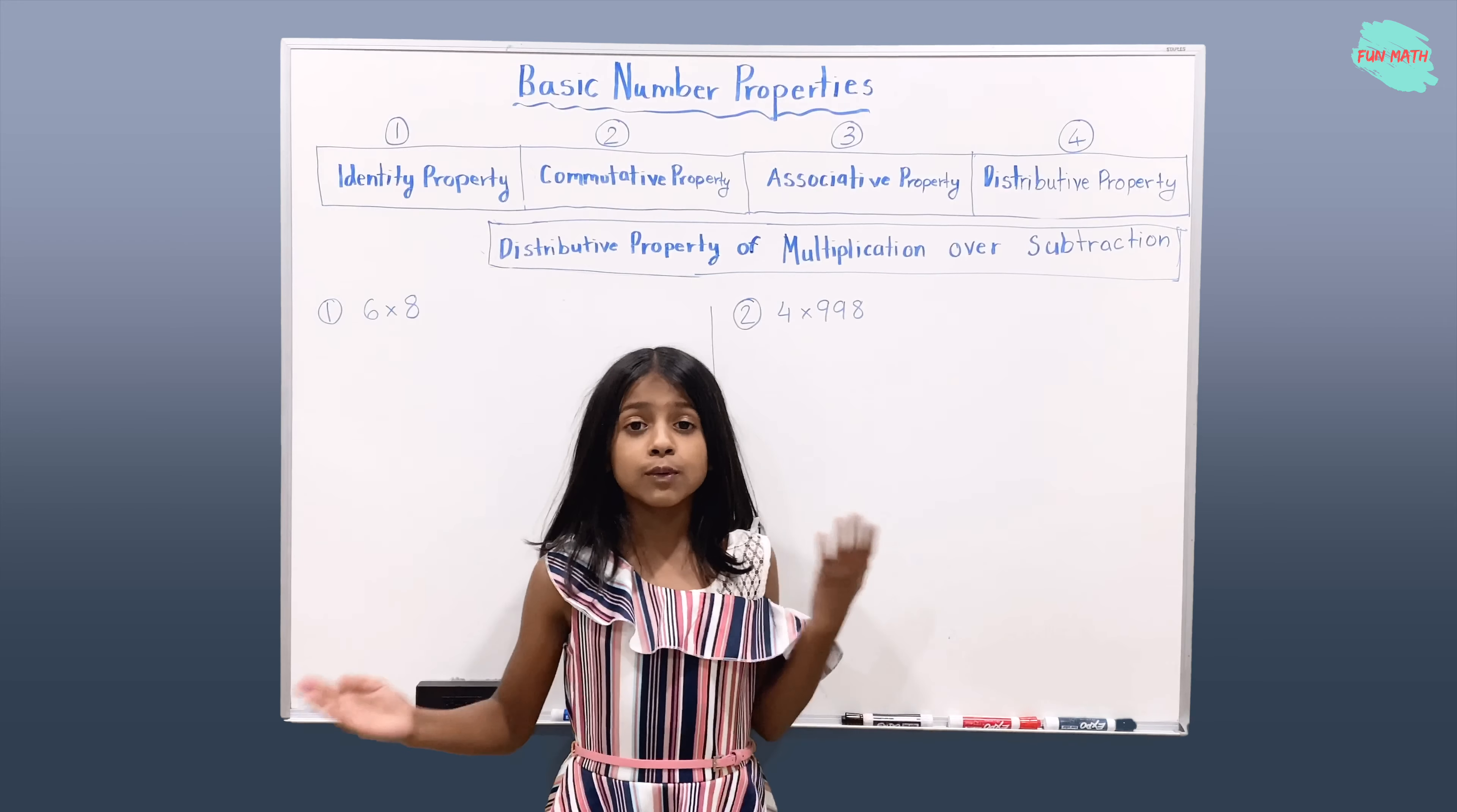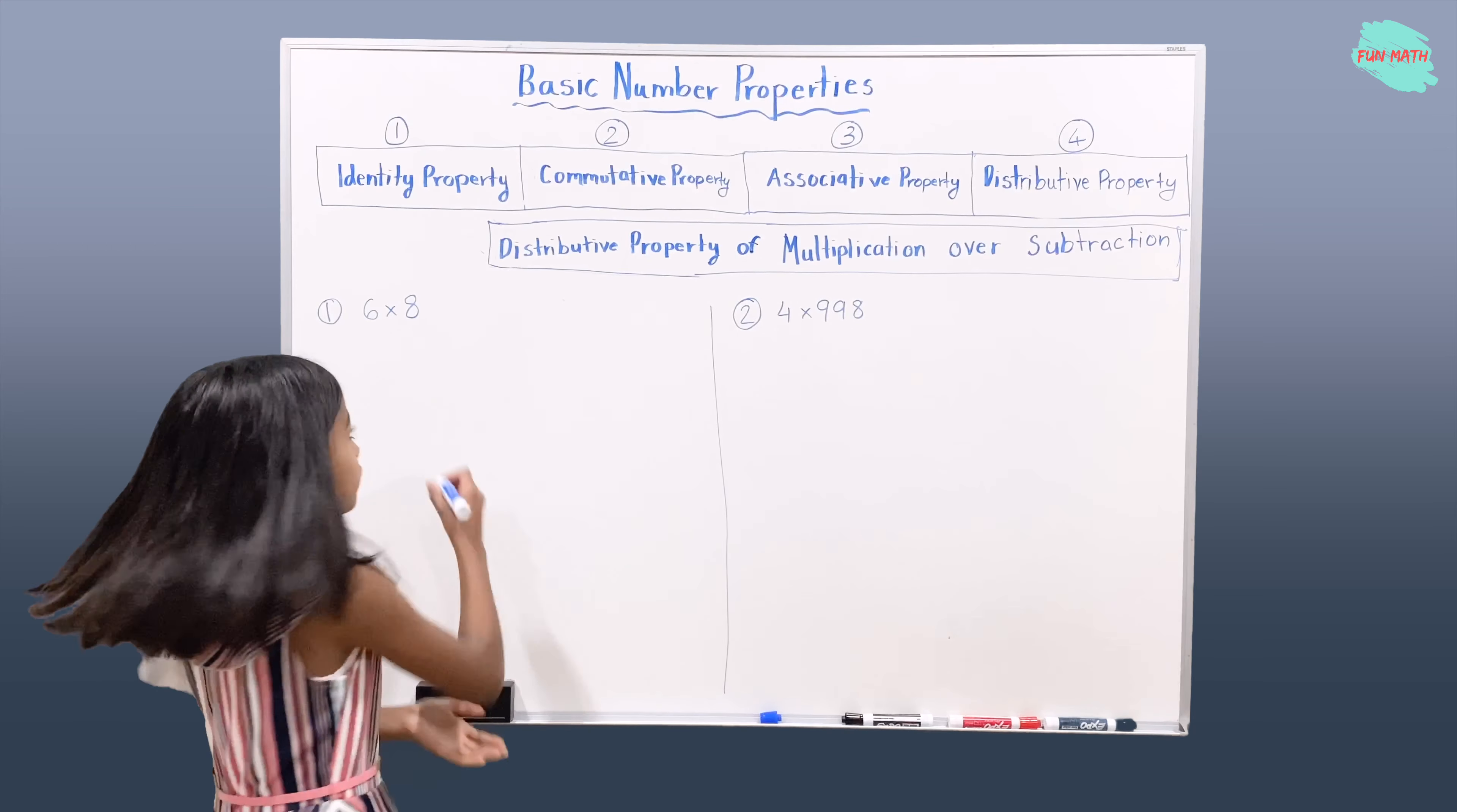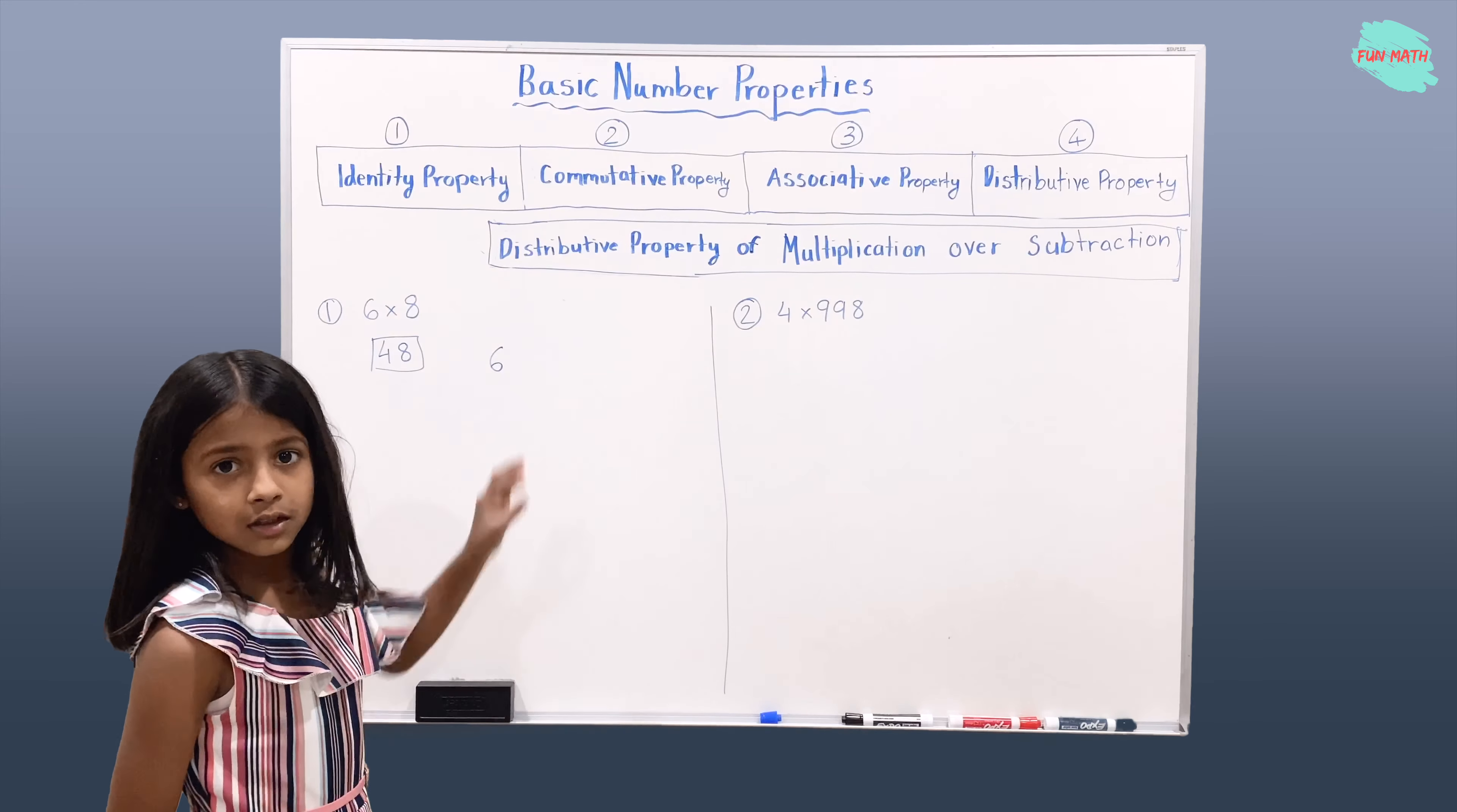Here we have two examples. Let's solve the first example to understand the distributive property of multiplication over subtraction. Okay, so 6 times 8 is 48. So now we'll break. We'll write 6 as it is, and we won't write the multiplication sign because we learned.